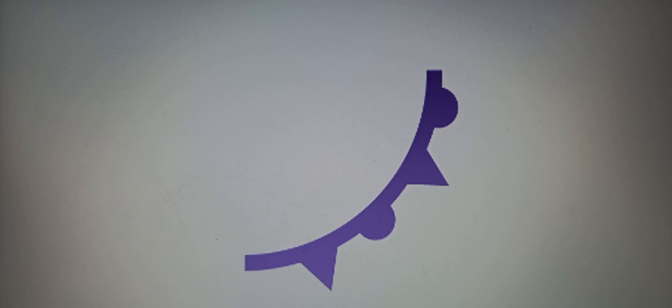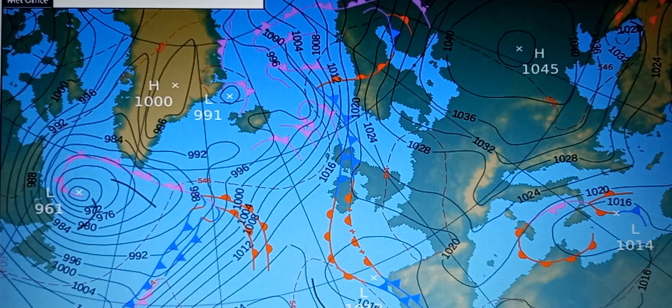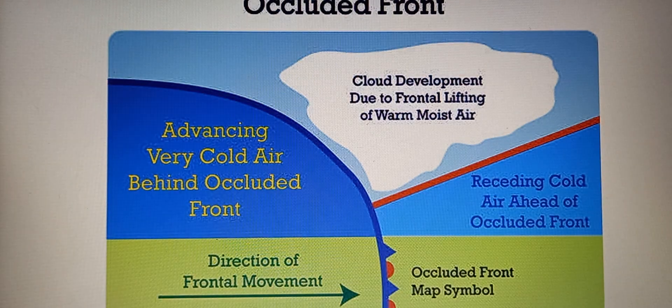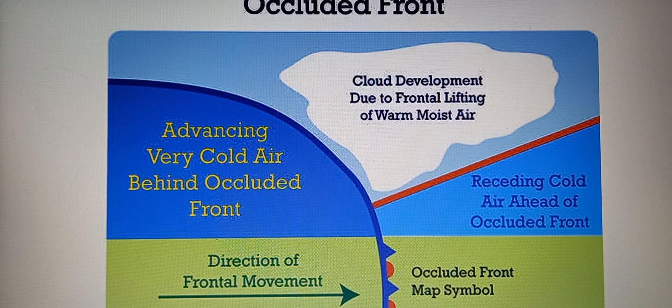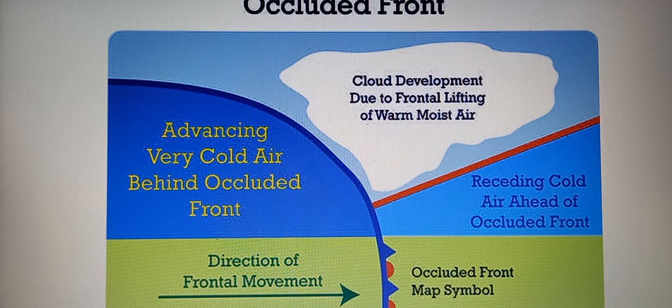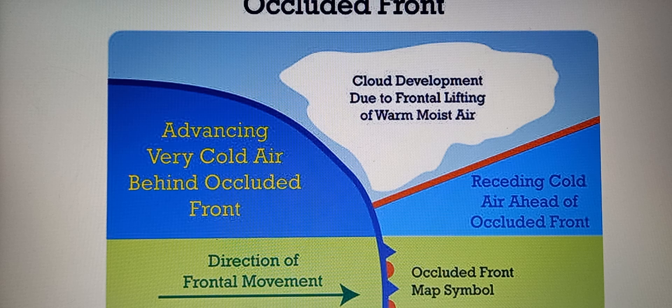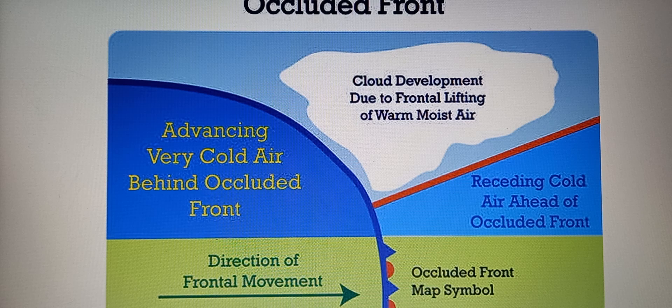Next is an occluded front. Occluded fronts form when a cold air mass pushes into a warm air mass that is behind a cool air mass. The warm air mass is pushed up above the cooler air masses because it is less dense than the cold air. The resulting occluded front may produce long periods of precipitation.